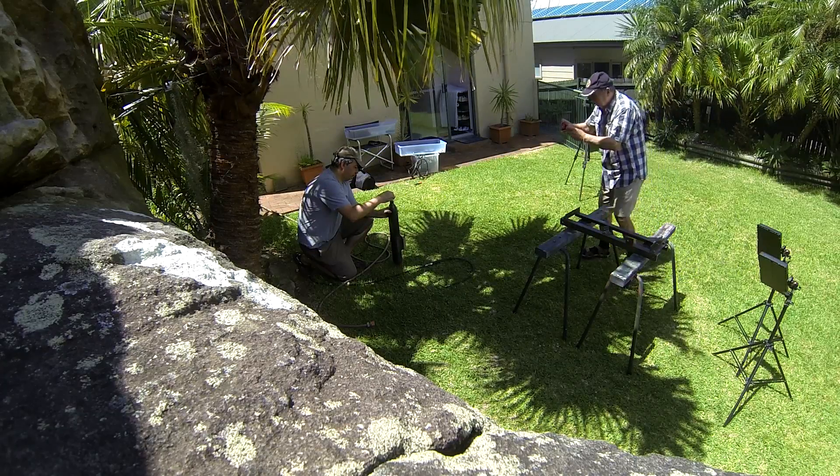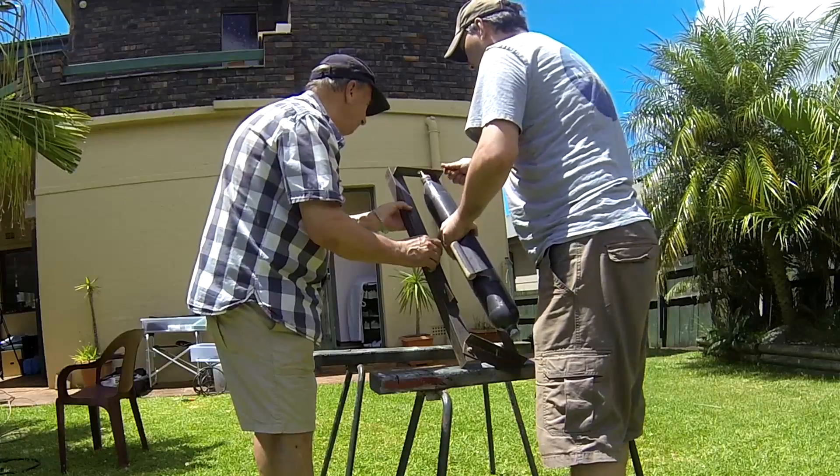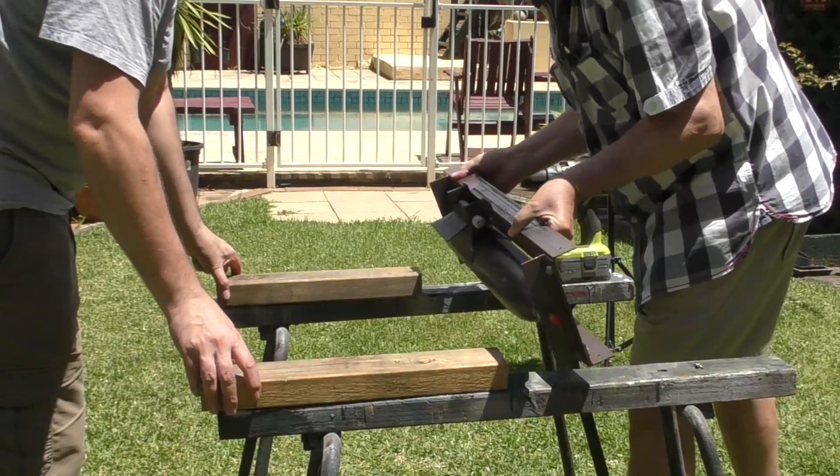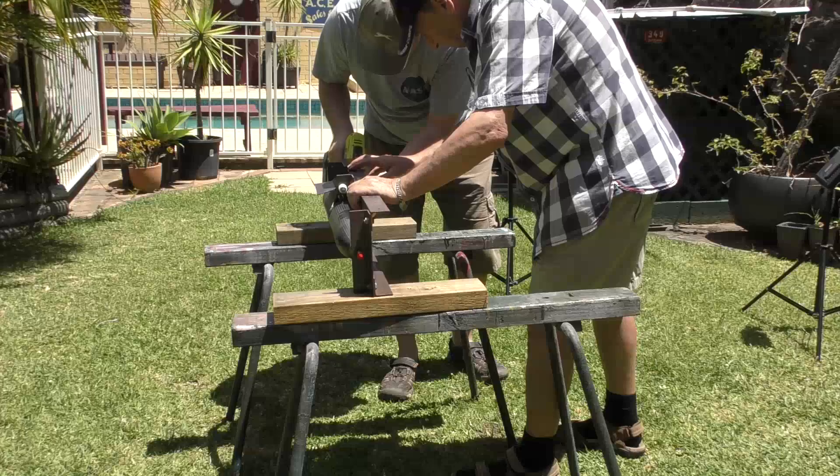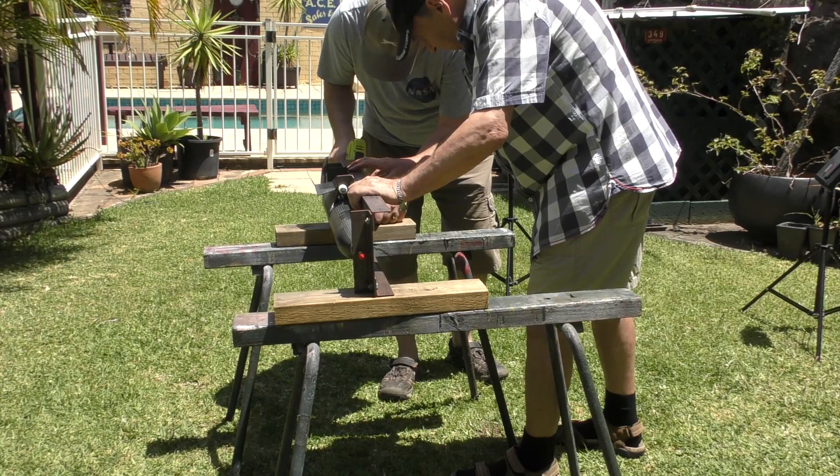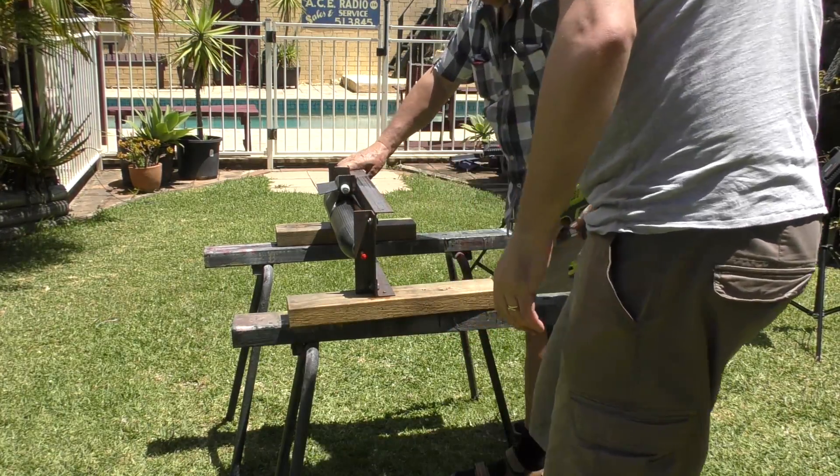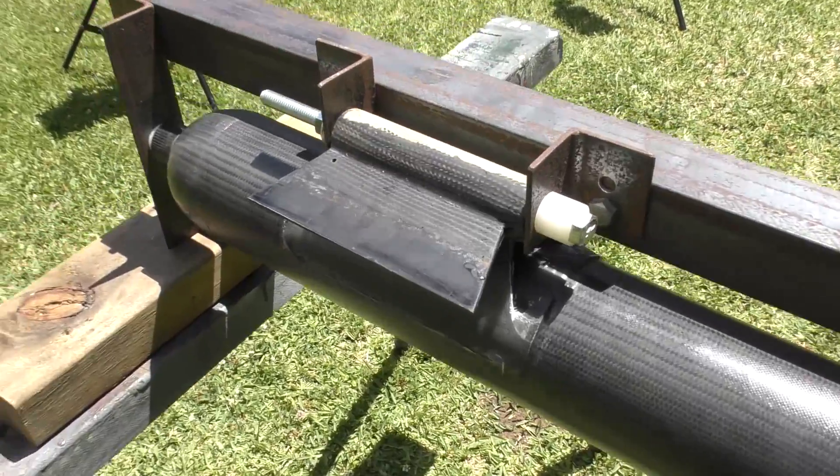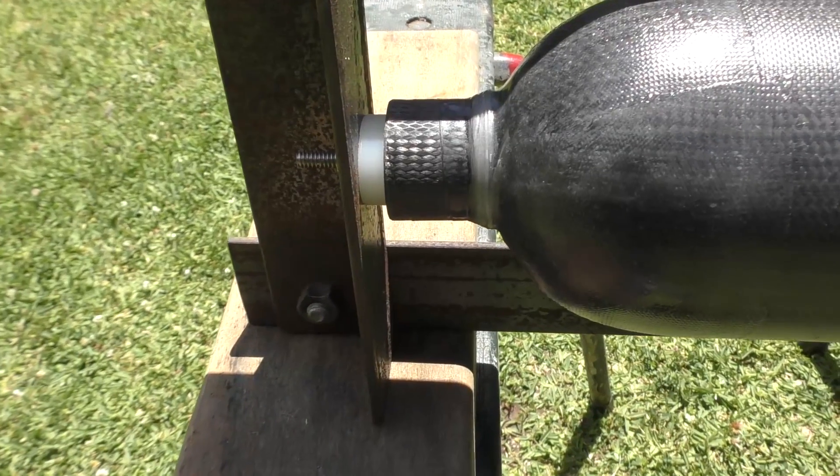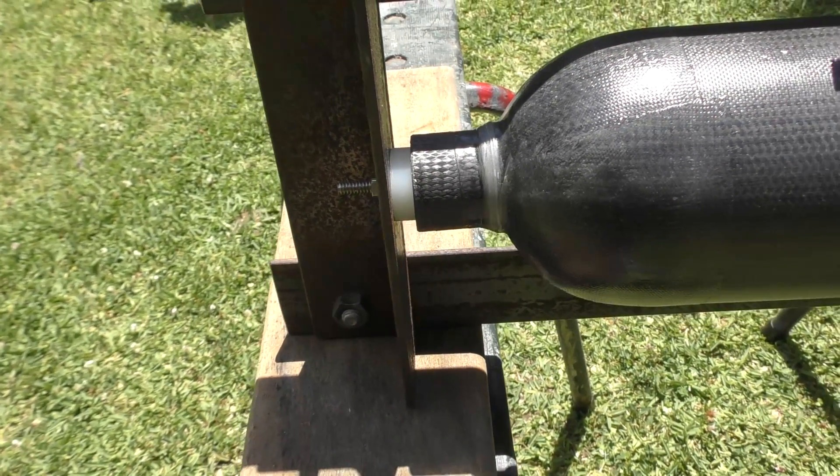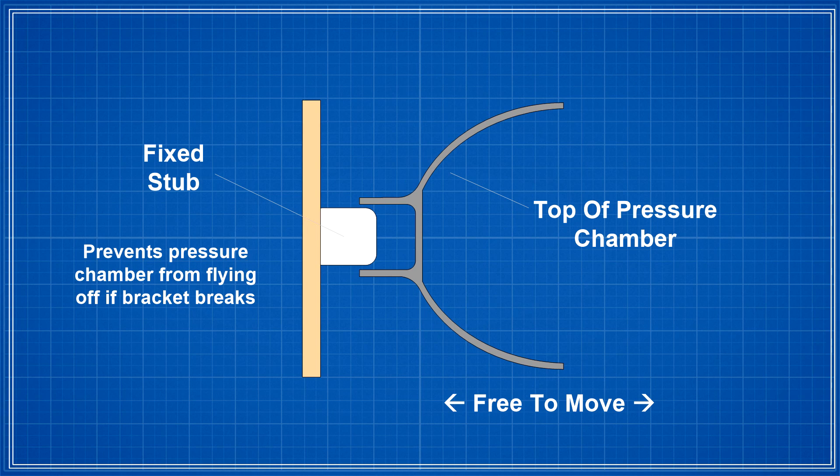We're filling the pressure chamber with water to prevent a large explosion should it break. We then mount the pressure chamber in the test frame. Mounting it sideways like this makes it easier to film. The entire pressure chamber is now only held by the bracket. The top of the pressure chamber slides over a short stub that is there to prevent the pressure chamber from flying off in case of failure. The chamber is free to slide back and forth on this so it provides no support against the pressure.